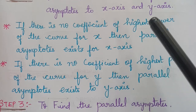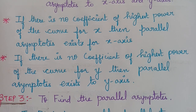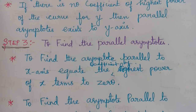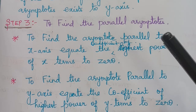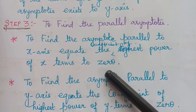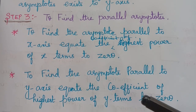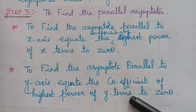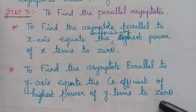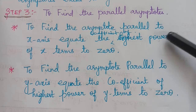You will understand this better when we consider a problem and solve it. After confirming the existence of the parallel asymptotes, we have to find the parallel asymptotes for the curve. To find the parallel asymptote to the x-axis, we have to equate the coefficient of the highest power of x terms to 0. Similarly, to find the asymptotes parallel to the y-axis, we have to equate the coefficient of the highest power of y terms to 0.